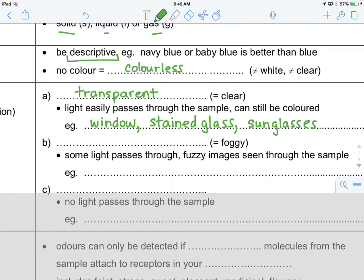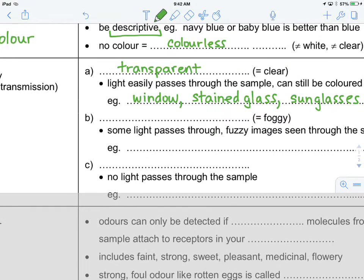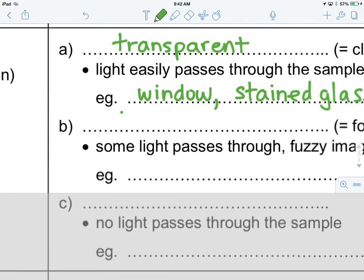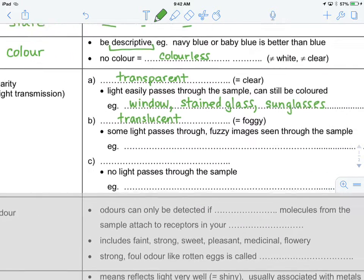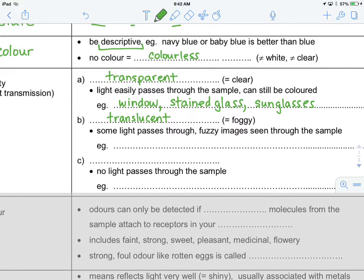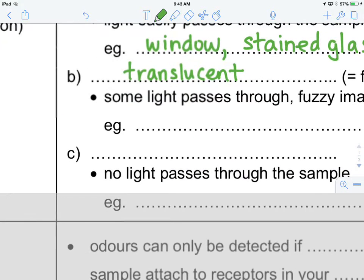Moving along, a little bit further down, if something is not transparent, but it still allows sunlight to pass through, we call that translucent. And this is what we mean by foggy, when something is foggy. Sunlight passes through, fuzzy images are seen. An example of this, two examples would be wax paper.